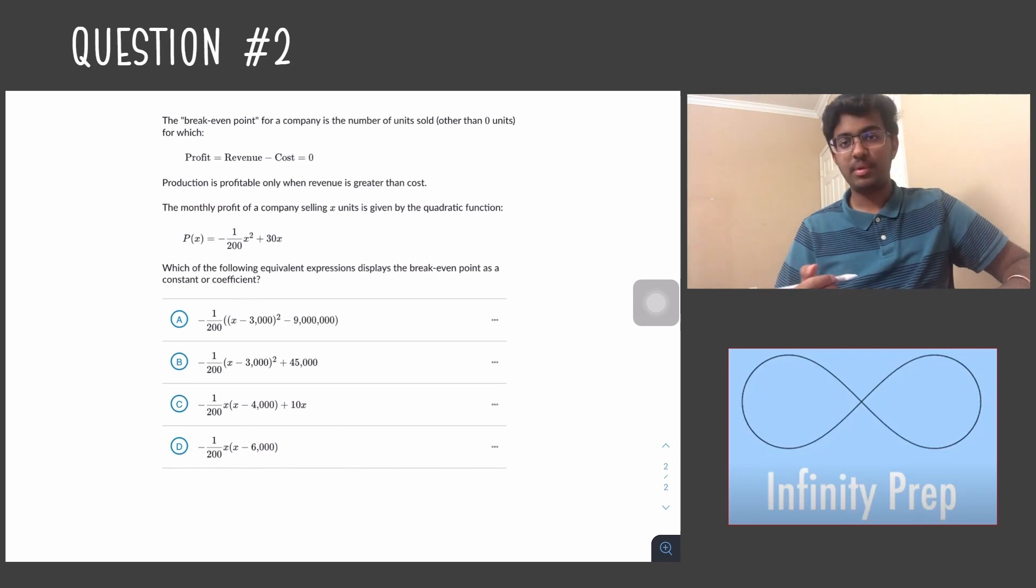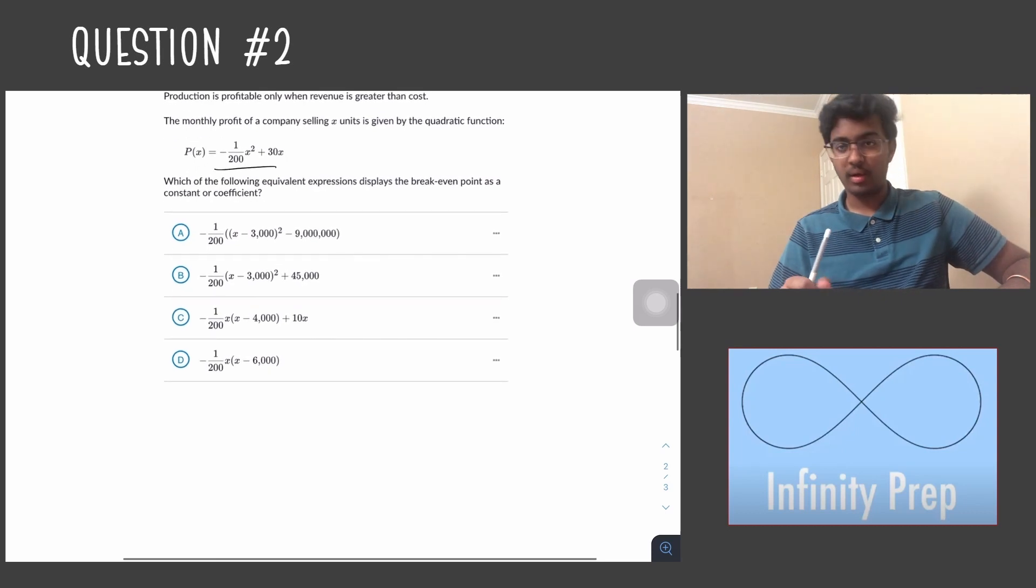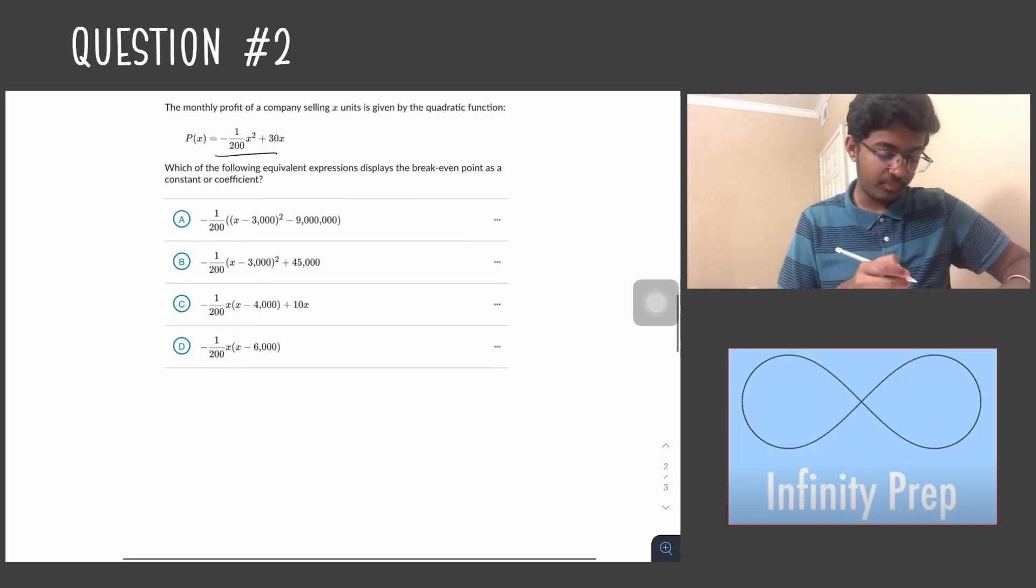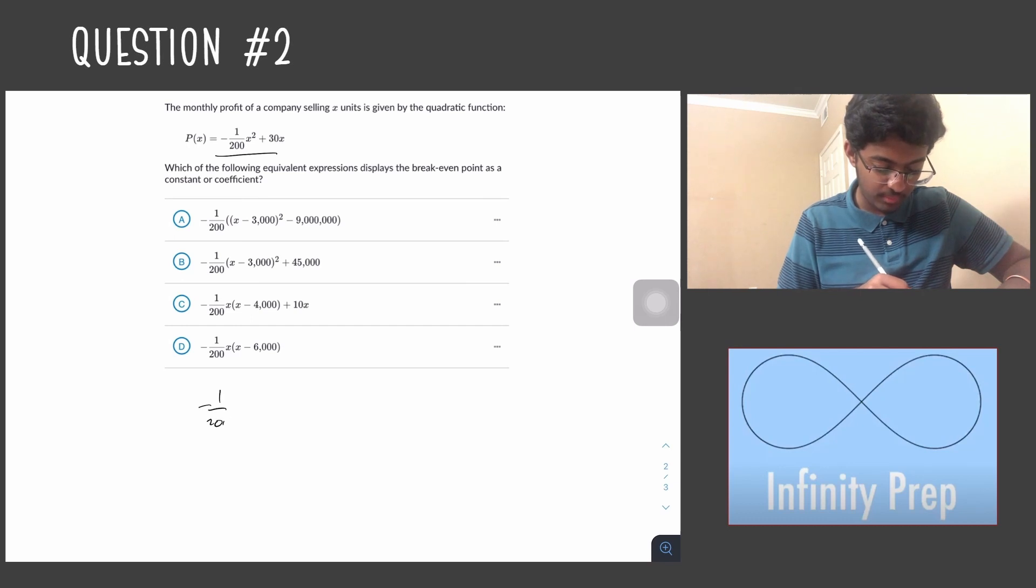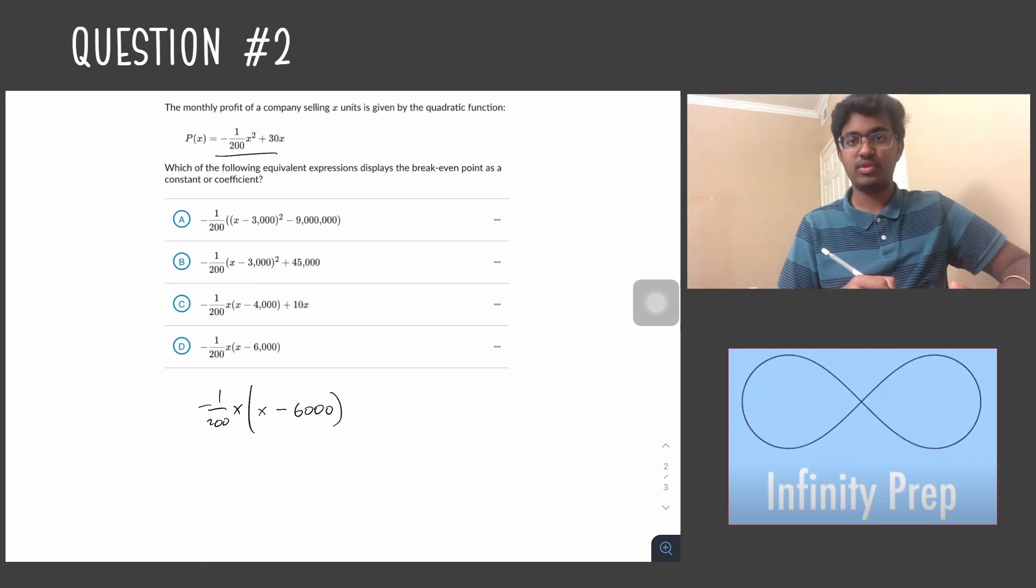Like the previous question, this question is also asking us to solve the equation here and find solutions for x. And also like the previous question, we can factor to find the solution for this equation. We can factor out the -1/200 and an x since they're common in both terms. So -1/200x, when we factor that out, we get x - 6000. This is answer choice D.